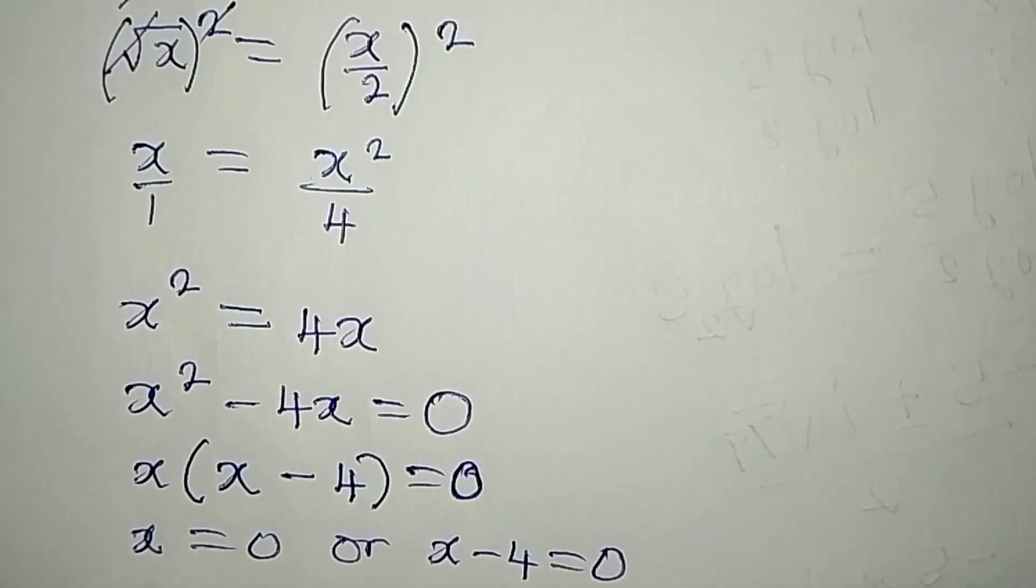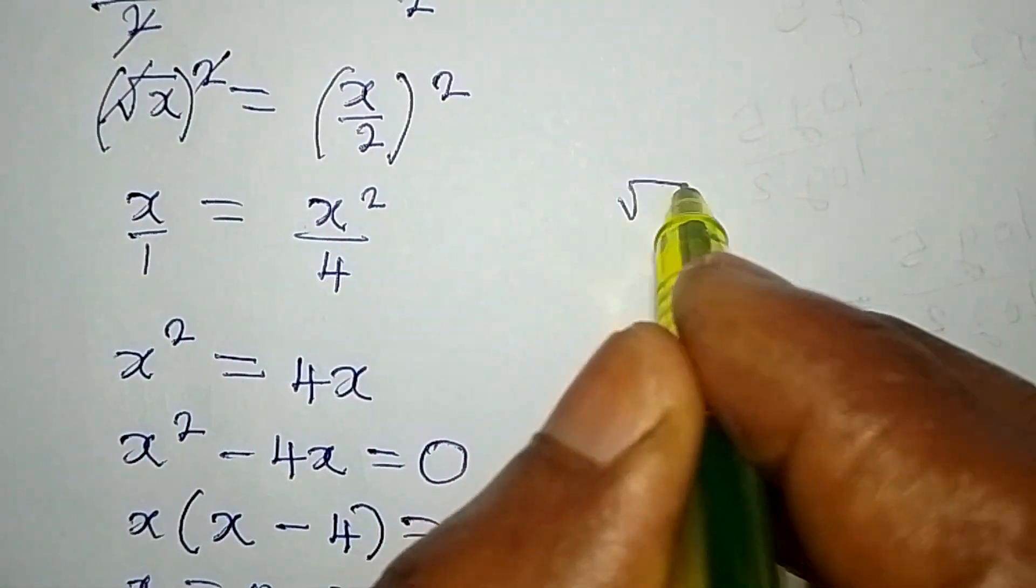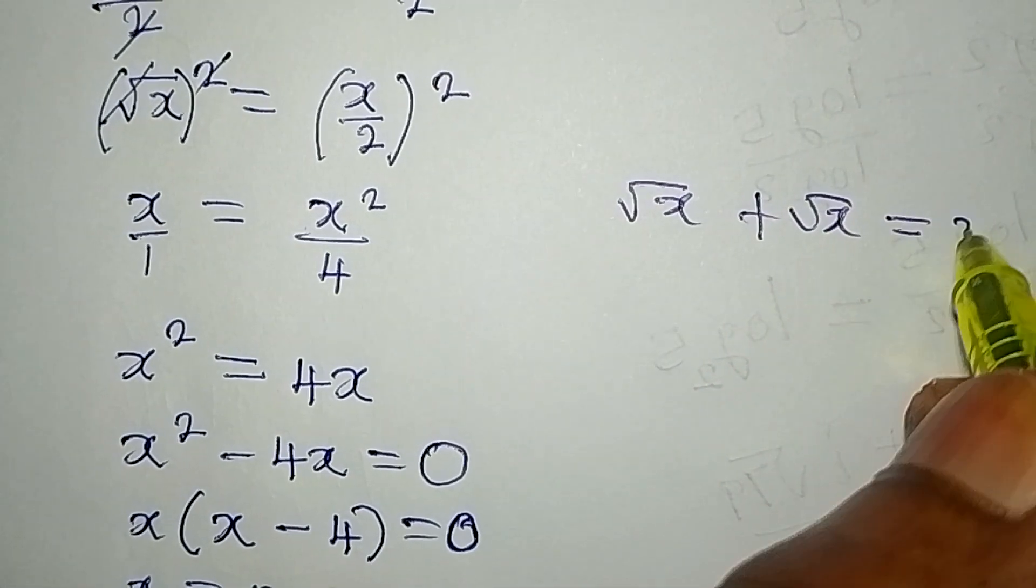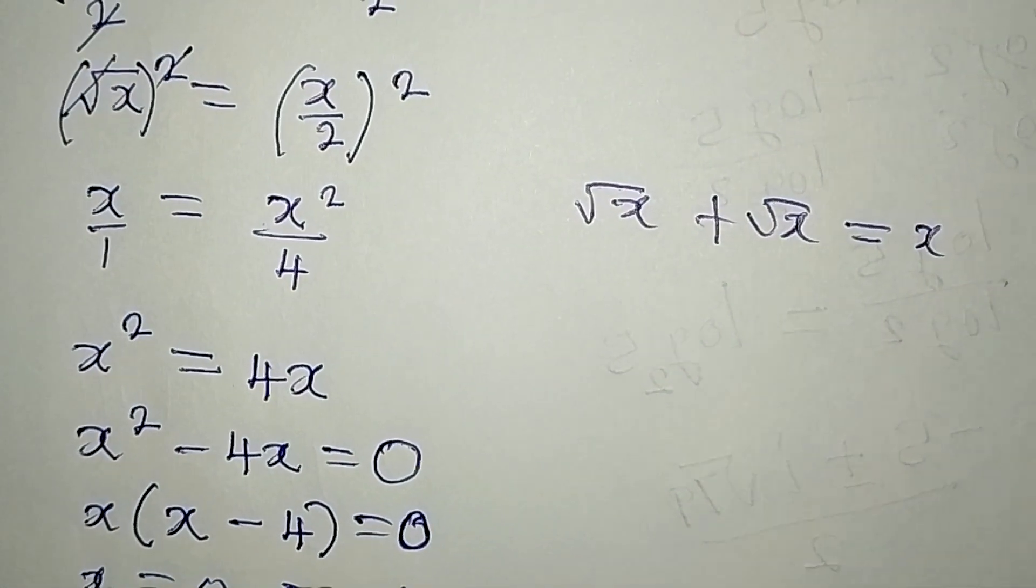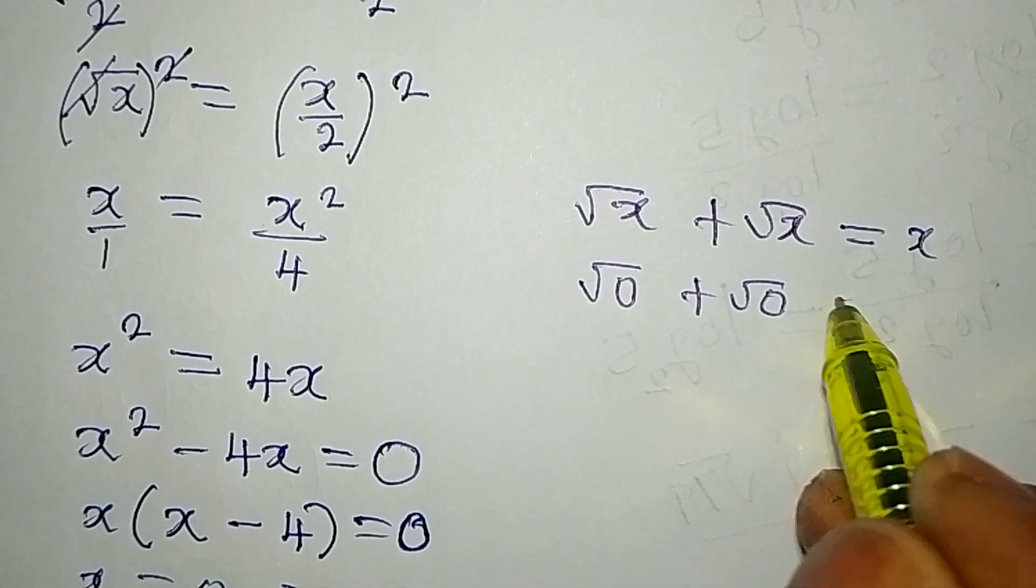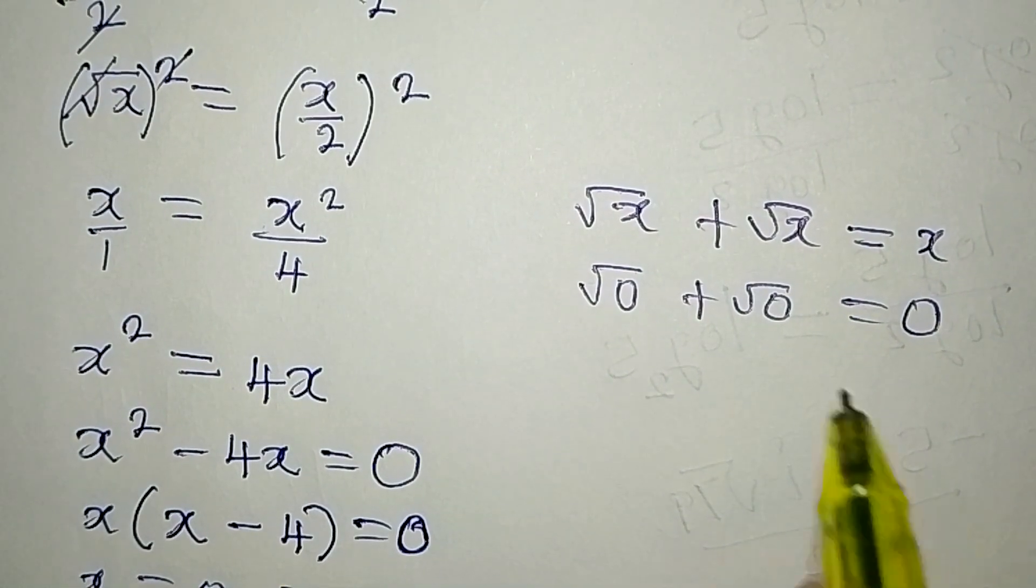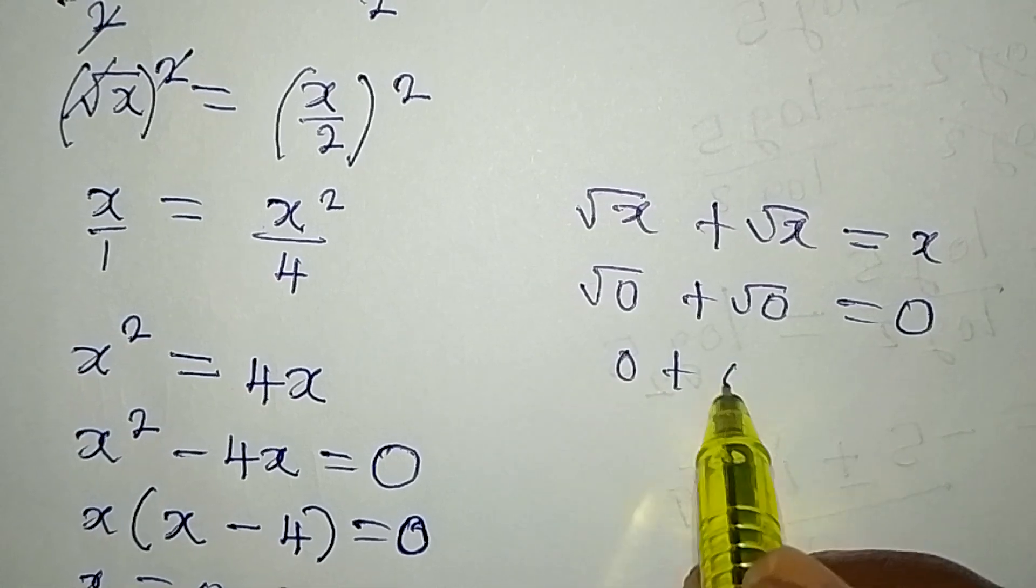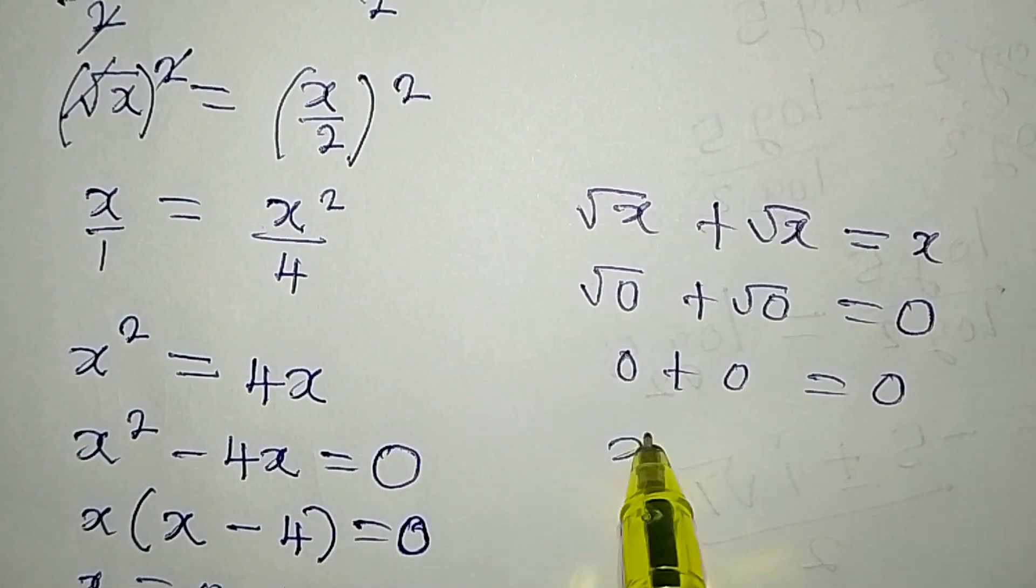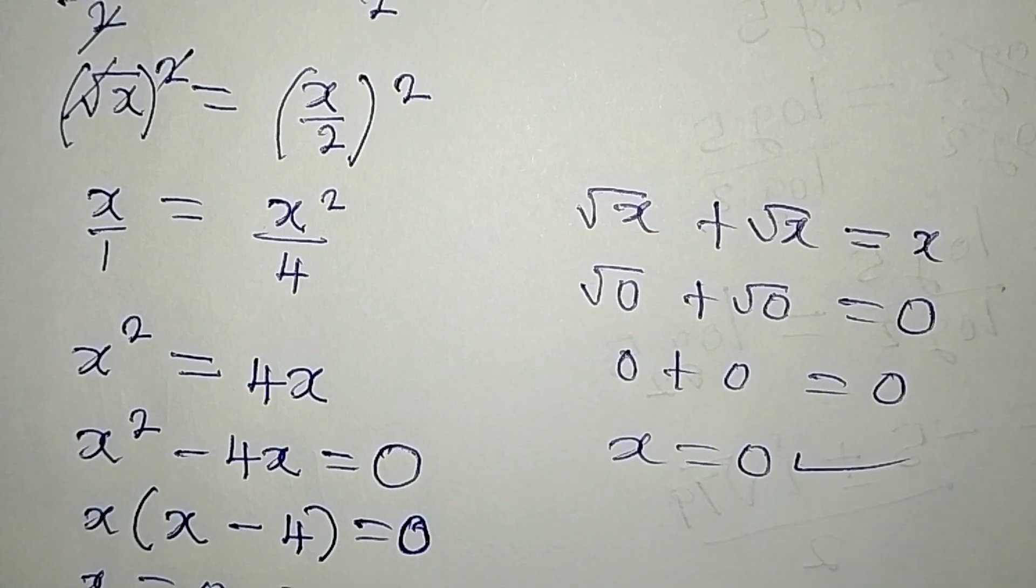Now what is the problem again? We have square root of x plus square root of x equals x. So if we put 0, we have square root of 0 plus square root of 0 equal to 0. And that is correct, because square root of 0 is 0 plus 0 and is equal to 0. So x equal to 0 is satisfying.